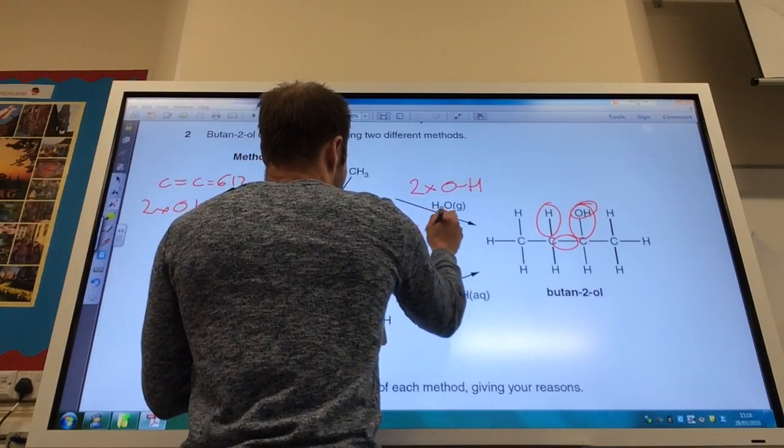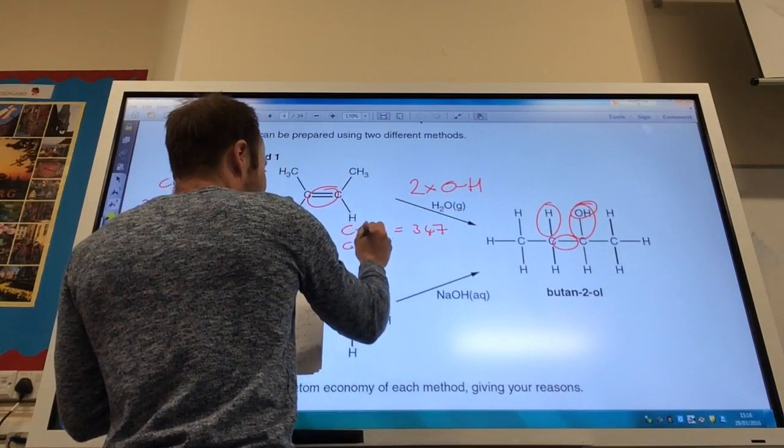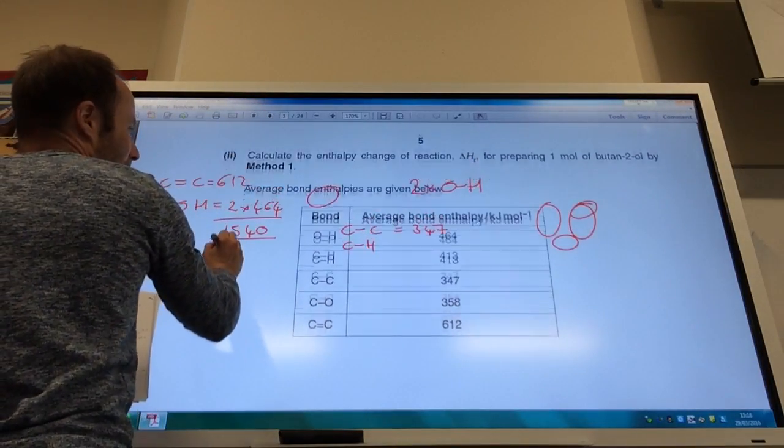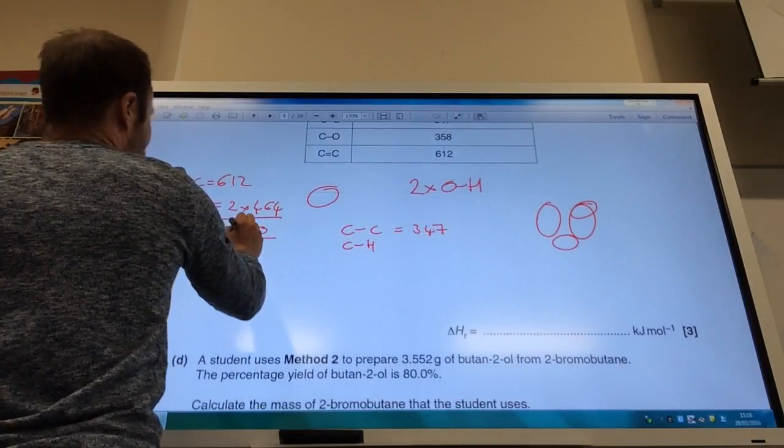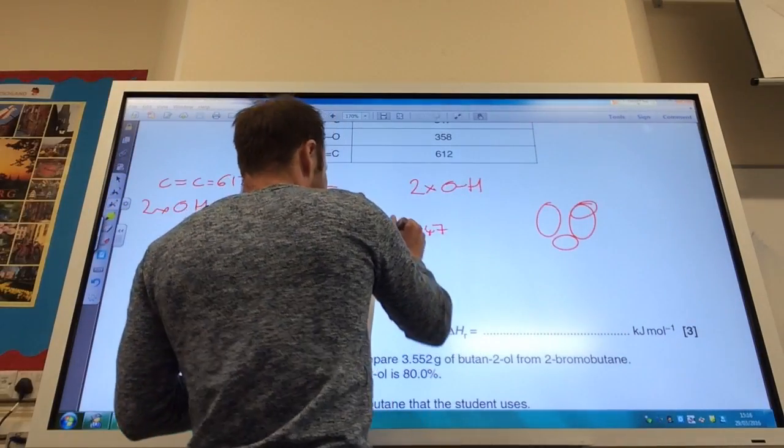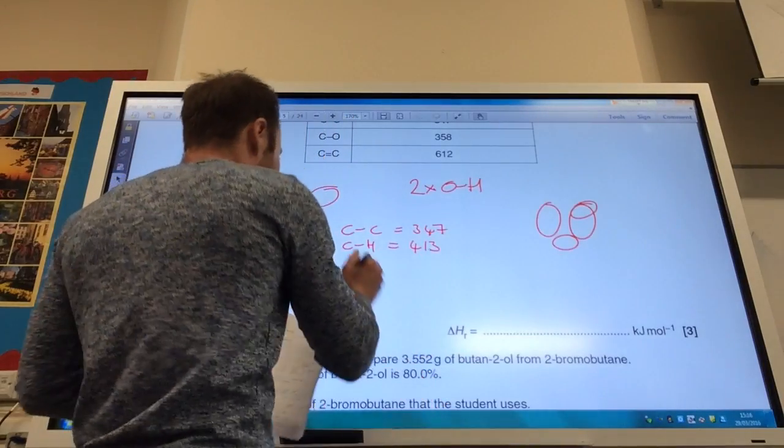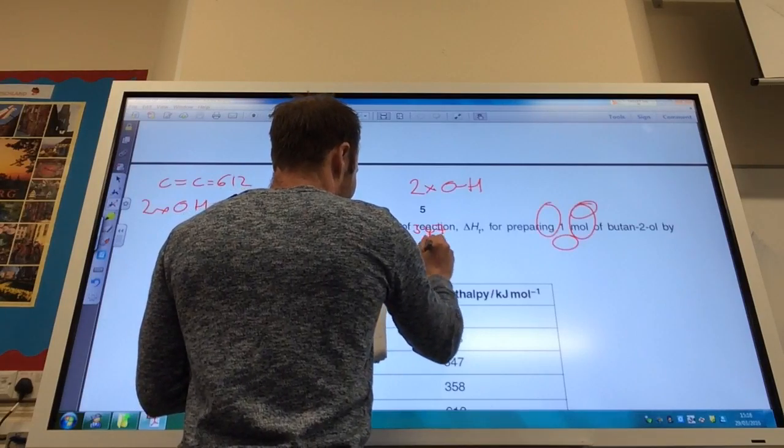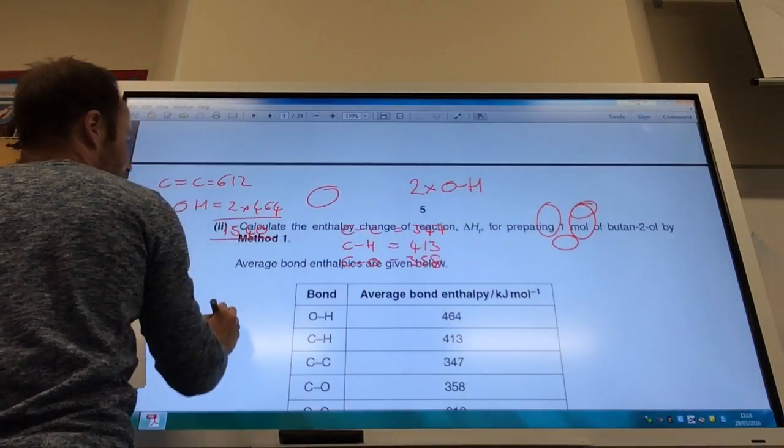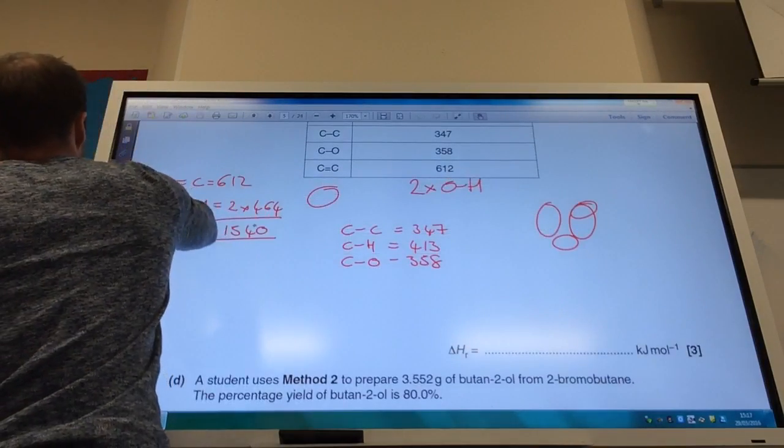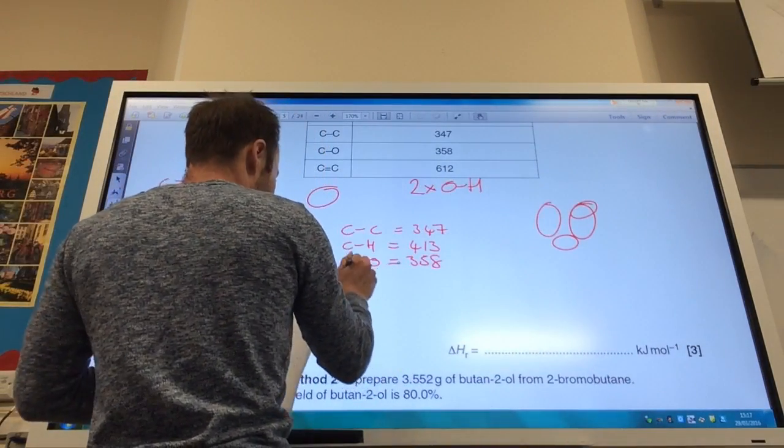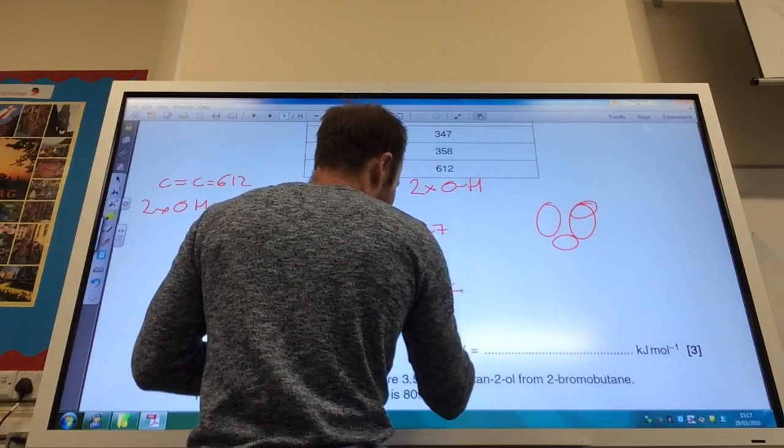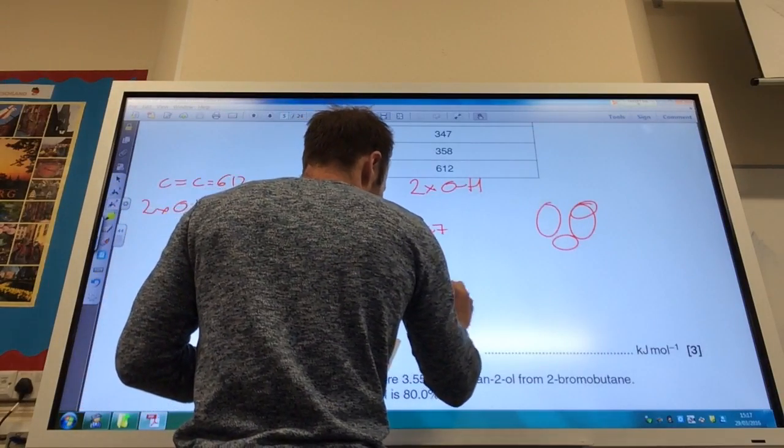For your bonds made you've got a carbon-carbon which comes in at being 347. You've also got yourself a CH, which will come in at being 413. You've got a CO which is 358. And finally you have got an OH which comes in at being 464. If you add all of those up it comes to 1582.